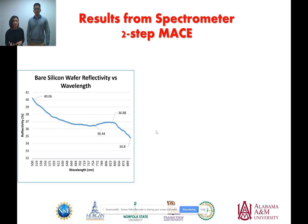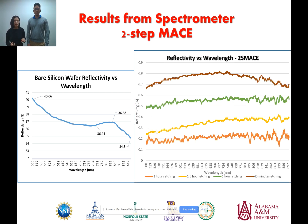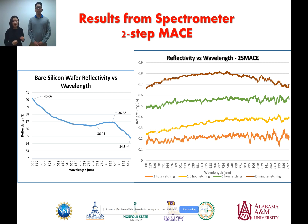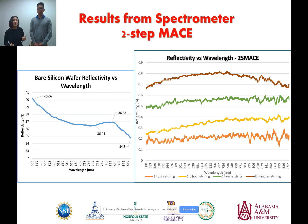Continuing with the results from the two-step MACE, also using the spectrometer: the bare silicon wafer has 36% reflectivity. Using MACE, we were able to reduce this significantly. For 45 minutes of two-step MACE etching, reflectivity is reduced to 0.7%. At one hour it goes down to 0.5%, at one hour 30 minutes to 0.3%, and at two hours it arrives at 0.2%, which is very close to approximately zero reflectivity. We achieved our goal and also confirmed an inverse relationship between reflectivity and etching time.